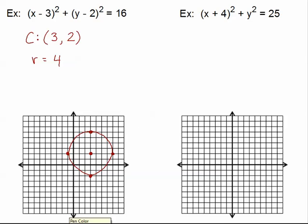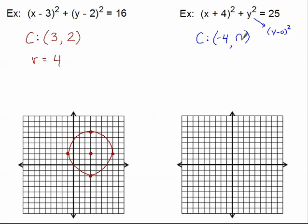Looking at the second circle, it's also already in standard form. To find h from the x quantity: x would have to be −4 to make the quantity zero, so h = −4. It doesn't look like there's a value of k, but you should think of it as y − 0, quantity squared, so k = 0. Radius squared is 25, so the radius is 5.